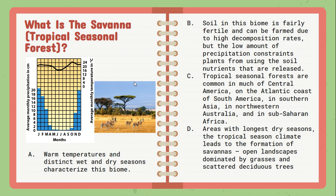The savanna, also called the tropical seasonal forest, features very warm temperatures and very distinct wet and dry seasons in its annual precipitation. Soil tends to be fairly fertile because of those high temperatures and still-high decomposition rates, but low precipitation can constrain some plants during certain seasons. The savanna tends to have the longest dry seasons among any of the tropical climates. Typical vegetation includes grasses and scattered deciduous trees.